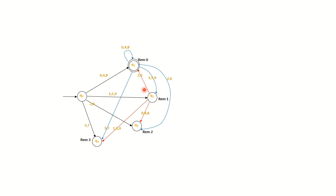From q2, on reading 2 or 6 we reach remainder-0 state q1 — for example, 12 divided by 4 gives remainder 0; 96 divided by 4 gives remainder 0. For the last group from q2, on reading 3 or 7 you will get remainder 1 — for example, 13 has remainder 1; 57 has remainder 1.